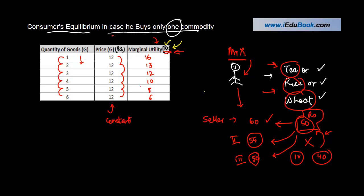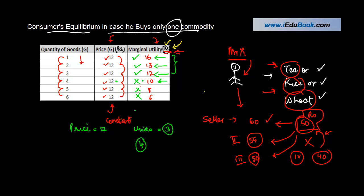Looking at the chart, when the price is 12 rupees and the marginal utility is 16 at the first unit, 13 at the second, and 12 at the third, the consumer will buy up to three units. For the fourth unit he would be paying 12 but getting utility worth only 10, so he stops at three units.